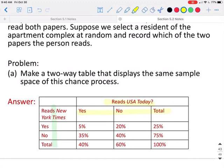So we do know in total, 40% of the people read USA Today, which means 60% of the people do not, which gives us 100%. Of the people that read the New York Times, we know that 25% of the residents do read the New York Times, which means 75% do not, again giving us our total of 100%. And we were told that 5% of the population reads both.